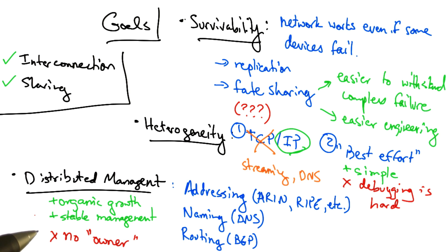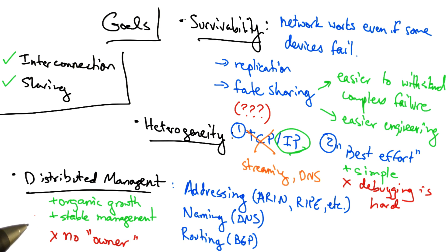And worse, local actions — such as misconfiguration in a single local network — can have global effects.